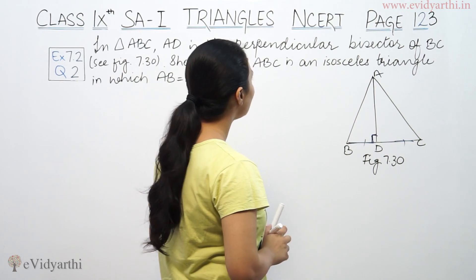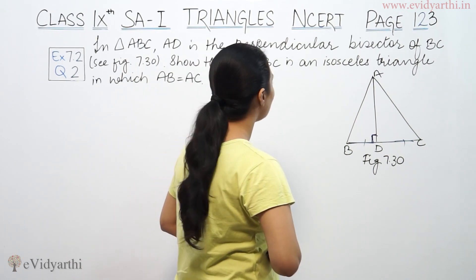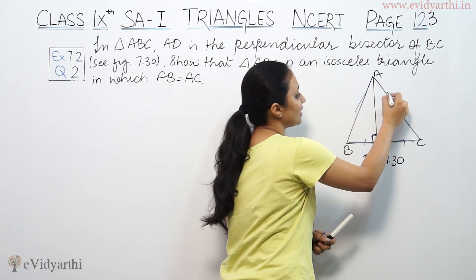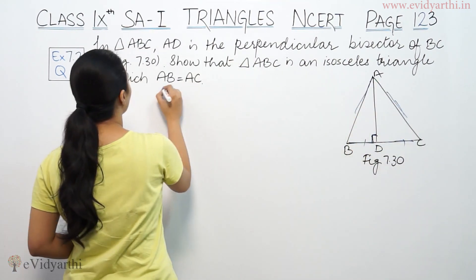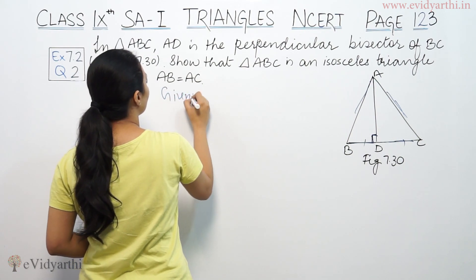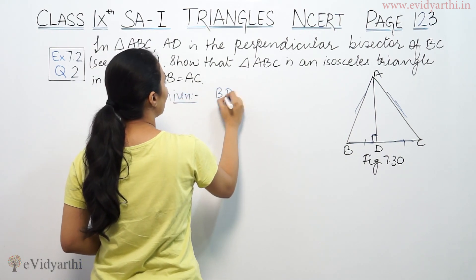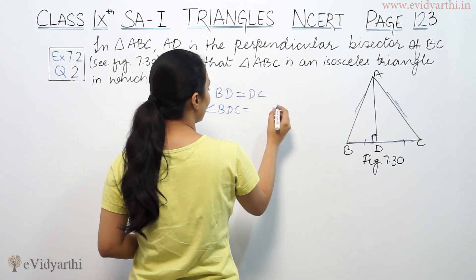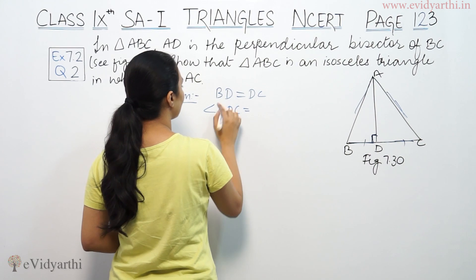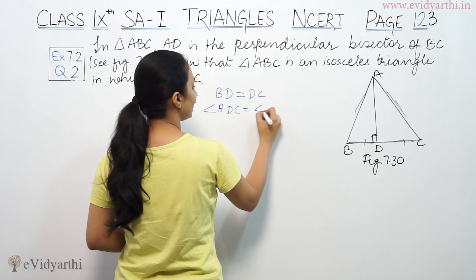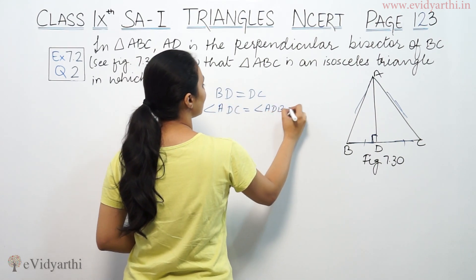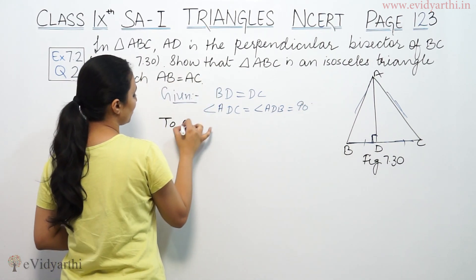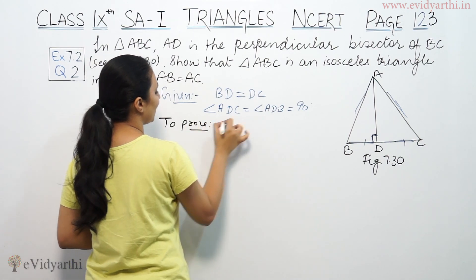So show that ABC is an isosceles triangle in which AB is equal to AC. We have to prove that AB is equal to AC. So we are given that BD is equal to DC and angle ADB is equal to 90 degrees. We have to prove that AB is equal to AC.